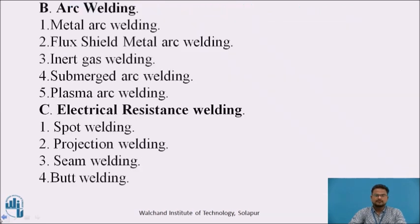The second type is arc welding. Under arc welding, the subtypes are: metal arc welding, flux shielded metal arc welding, inert gas welding, submerged arc welding, and plasma arc welding.